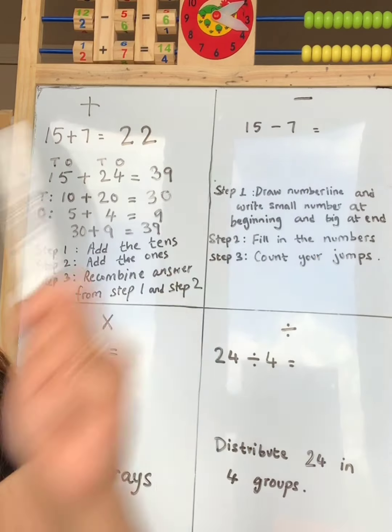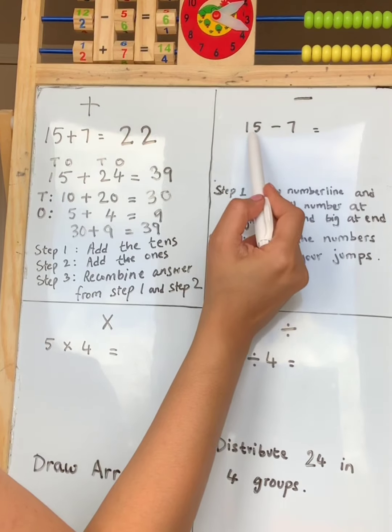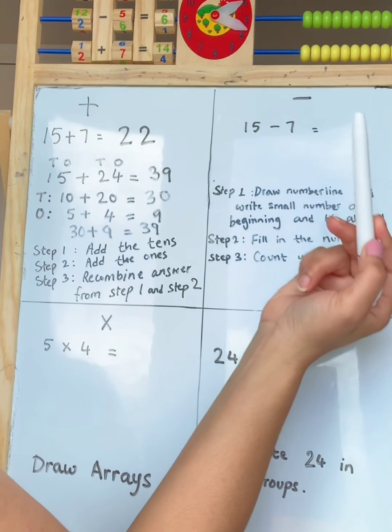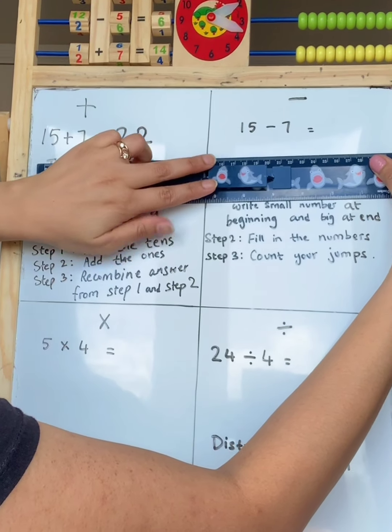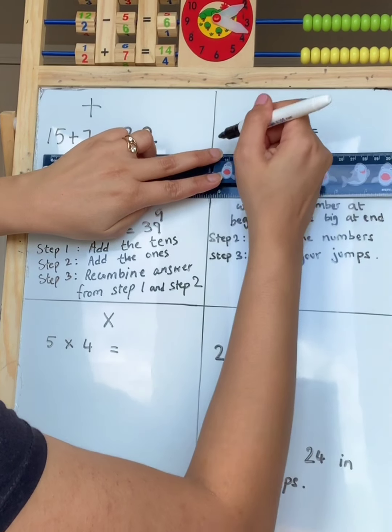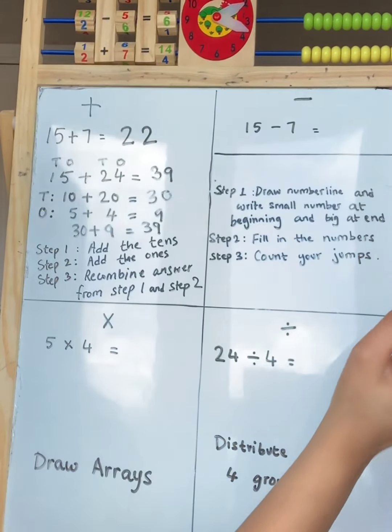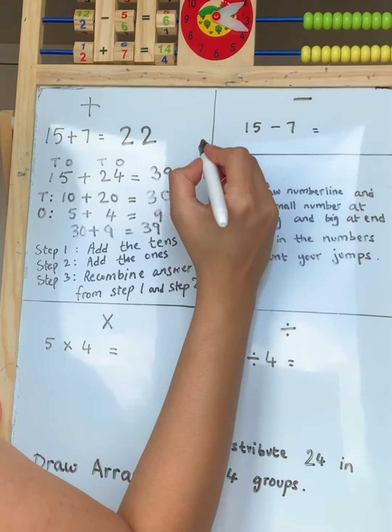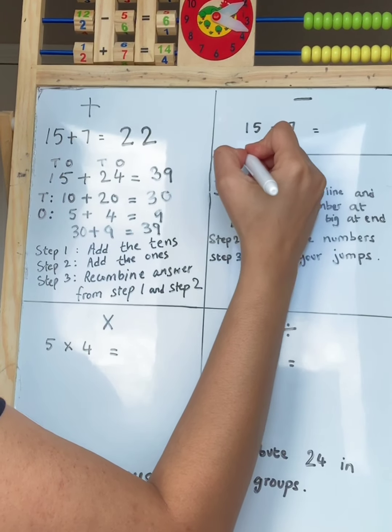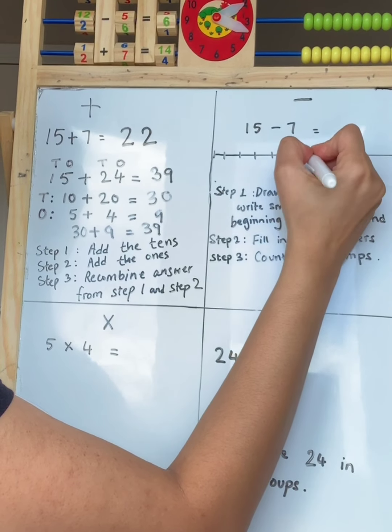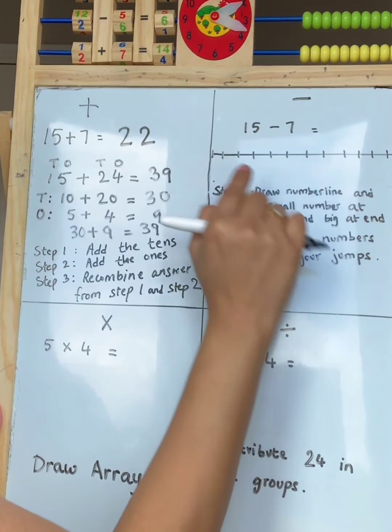Next is take away. Take away makes a number small. So we have 15 take away 7. What are the steps? Step 1. Draw your number line. Carefully place my ruler. And draw a nice straight number line. That's my straight line. And now I'm going to draw my little lines. Make sure we have even spacing so we don't get muddled up.